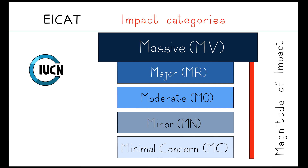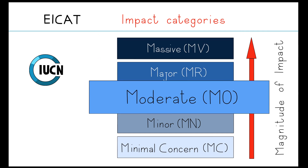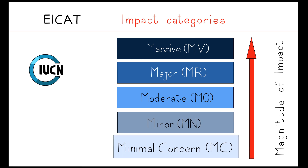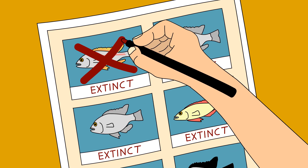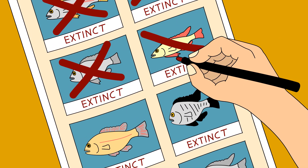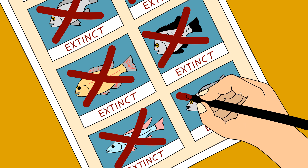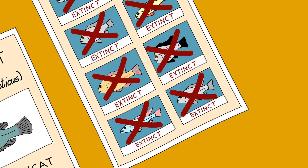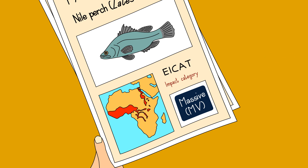In EICAT, species are classified in a simple, objective and transparent way, according to the magnitude of their impact, from massive to minimal concern. For example, a species is considered to have massive impacts when it leads to the extinction of native species and produces irreversible changes to ecosystems, like the Nile perch, which led to the extinction of hundreds of endemic fish.